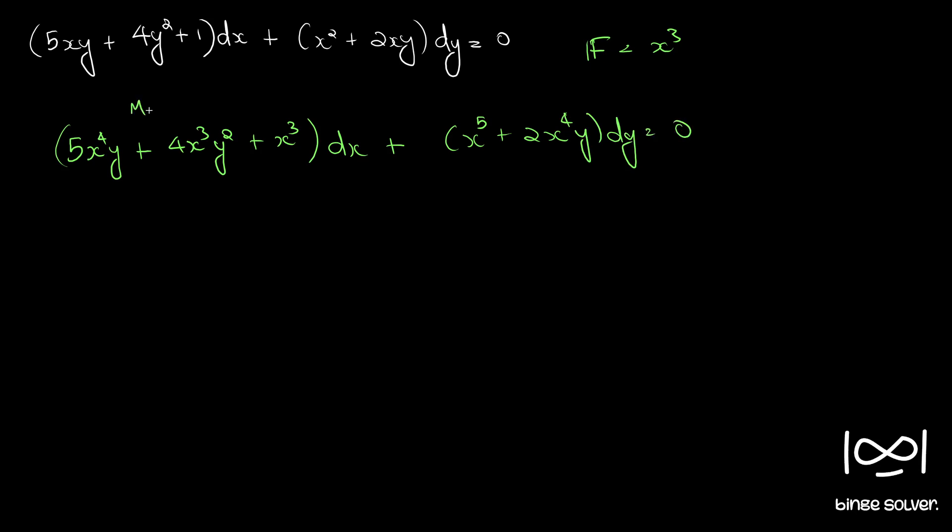So this is our new M. This is our new N. Let's see dou M by dou y which is 5x raised to 4 plus 8x cube y and dou N by dou x is 5x raised to 4 plus 8x cube y.